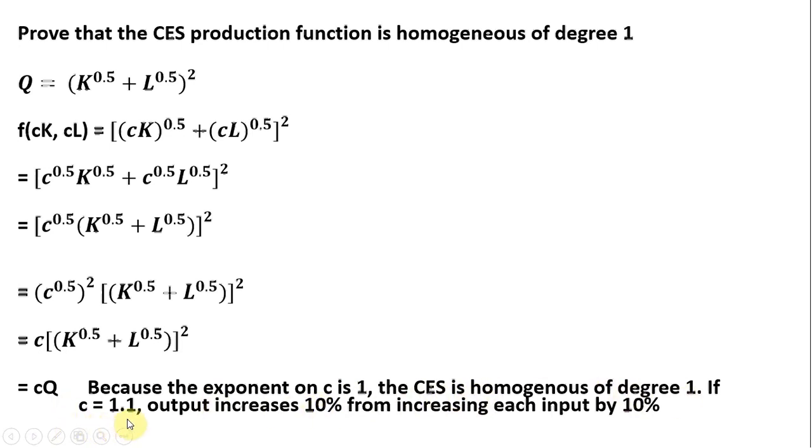If C equaled 1.1, output increases 10% from increasing each input by 10%. So we have constant returns to scale here.